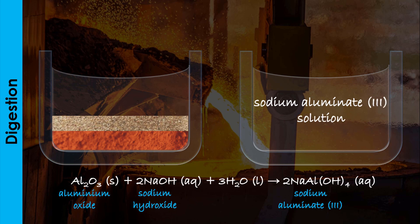These impurities are filtered out from the mixture as a sludge. The iron (III) oxide is a basic oxide and cannot react with an alkali, while the silicon (IV) oxide is insoluble in sodium hydroxide solution.